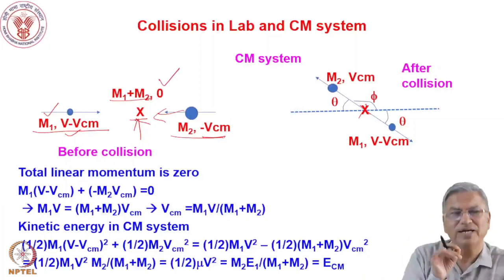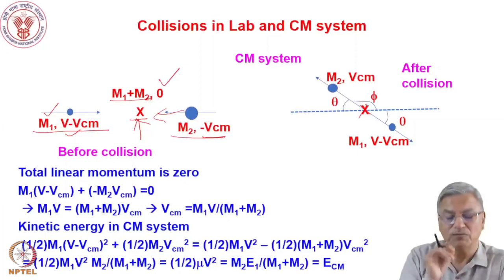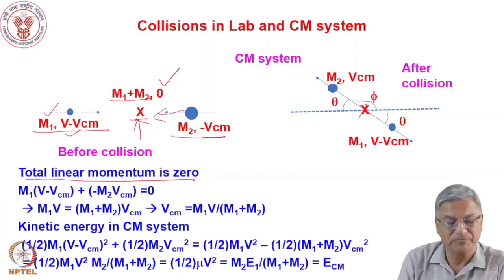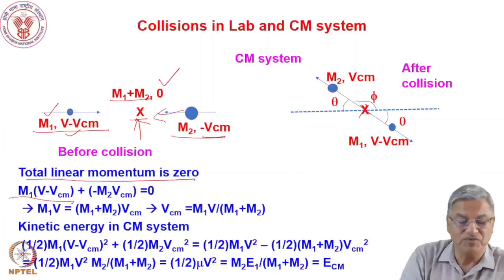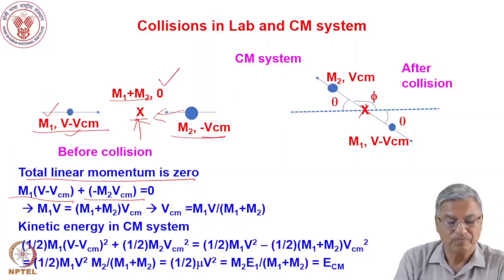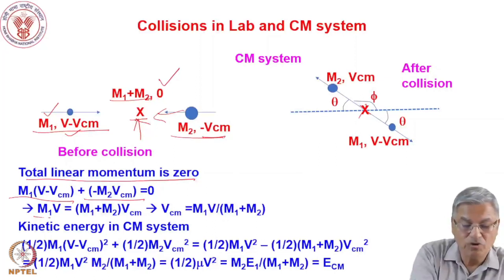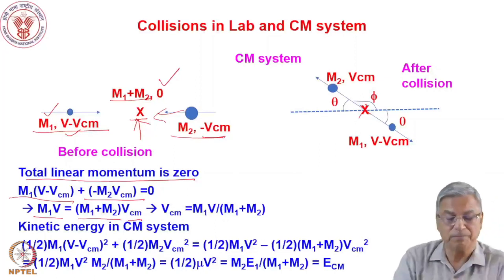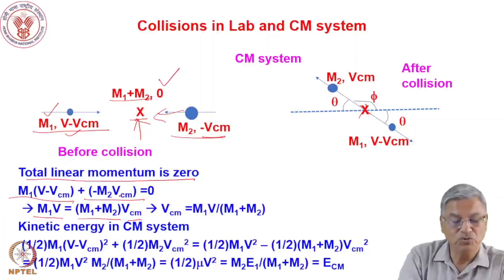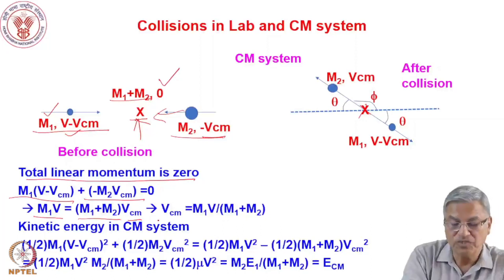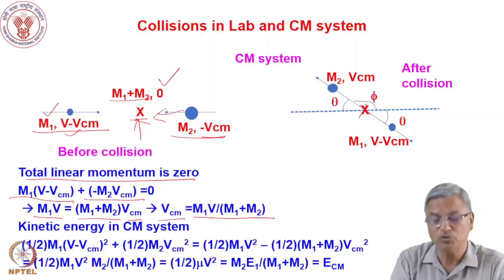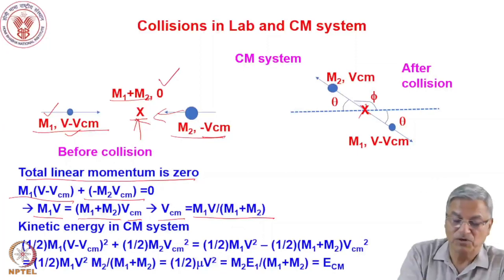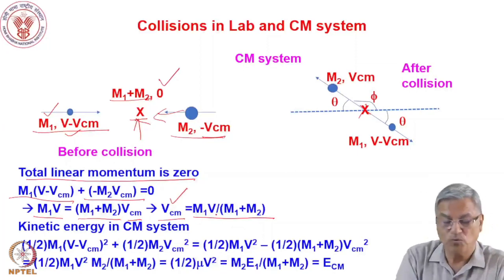Writing the momentum equation in the center of mass system: M1·(V − VCM) + M2·(−VCM) = 0. Solving: M1·V = (M1 + M2)·VCM, giving VCM = M1·V / (M1 + M2). This is the same formula obtained from the laboratory frame — the velocity of the center of mass is M1·V / (M1 + M2).